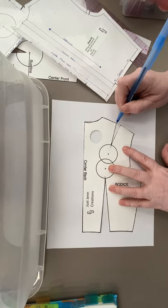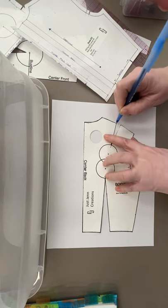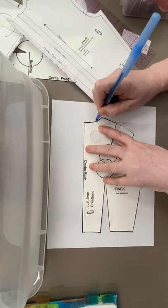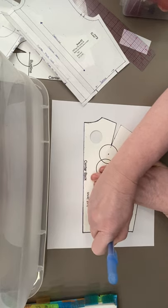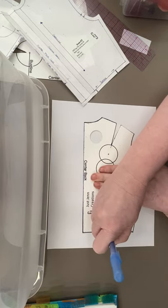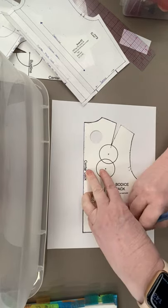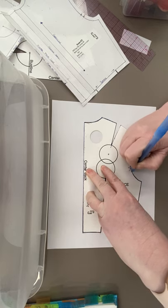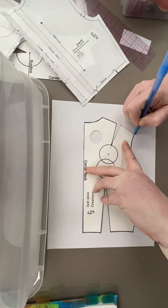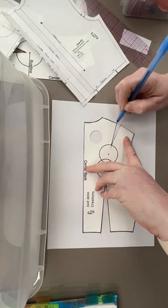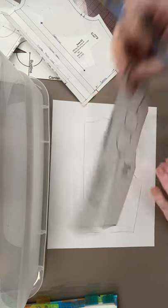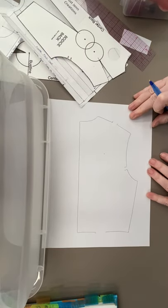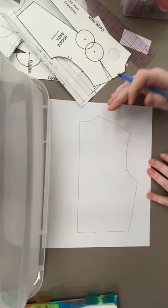I'm going to trace the sloper, but I'm going to stop at the opening of the darts and I'm not going to trace the darts in. I'm just going to make a note of where they are just for personal reference. Okay, it's pretty well outlined.